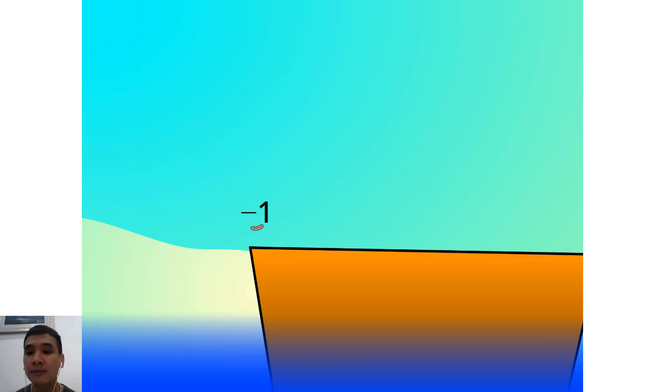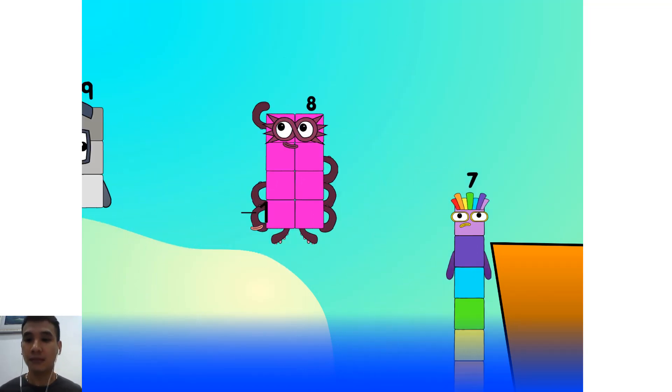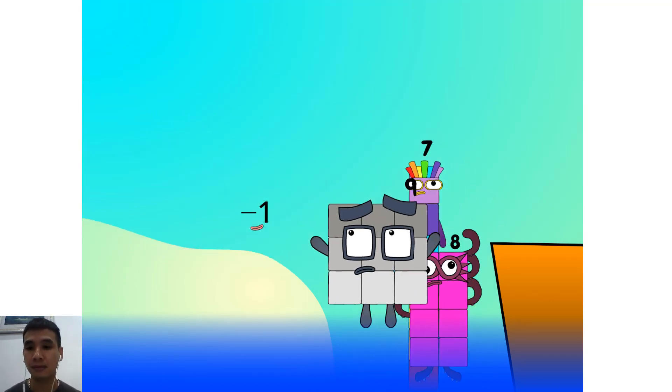All right me hearties. Into the boat you go. Forty numbers. Number zero. One. Two. Move along lads. Three. Four. Five. Six. Seven. Step lively. Eight. Smartly now. Move along. Nine.